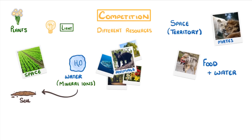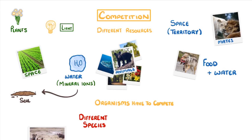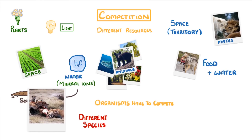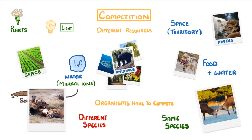The problem is that all of these resources are limited. So to make sure they get enough of them, organisms have to compete with each other. This competition might be between organisms of different species, like when lions and hyenas compete for a wildebeest, or between organisms of the same species, such as when male deer compete with each other for females.